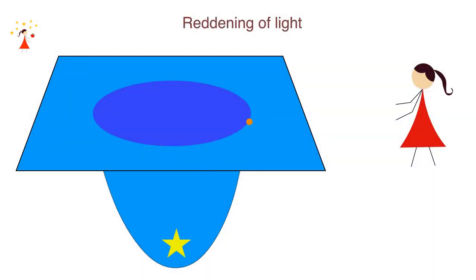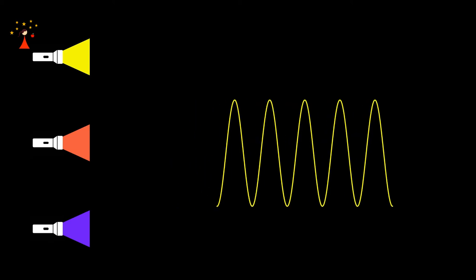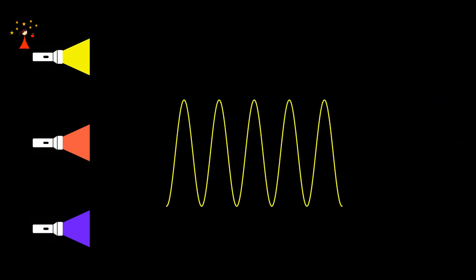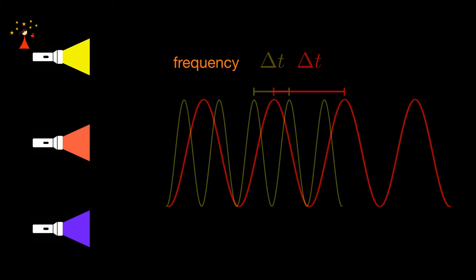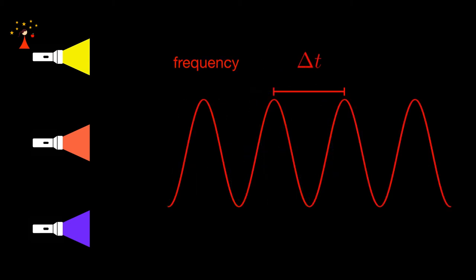Yes, the second method consists in looking at the reddening of light when it escapes a gravitational potential. As you know, light comes in different colors and we can represent light as a wave which is propagating through space. Now, as for any wave, we can associate a frequency to it which is related to the time that passes between two different crests. And the larger this time is, the smaller the frequency, and in the visible spectrum the redder the light is.